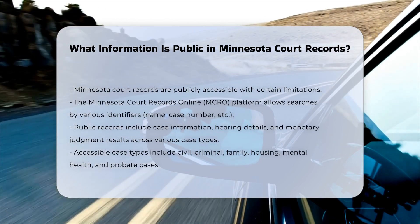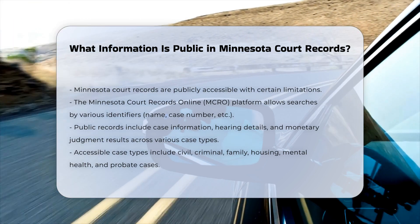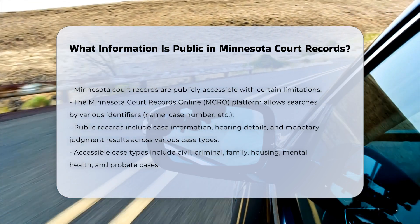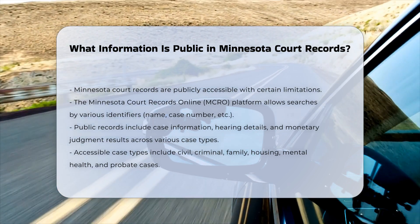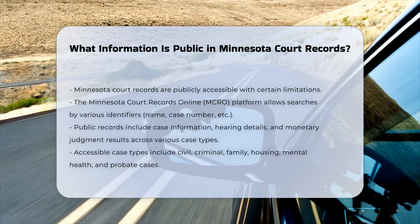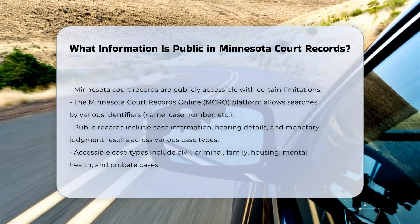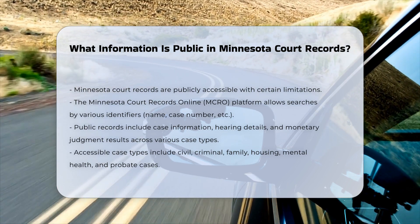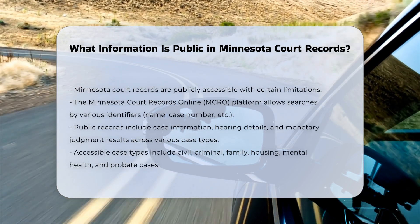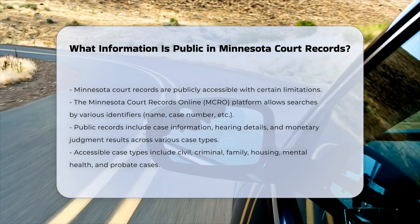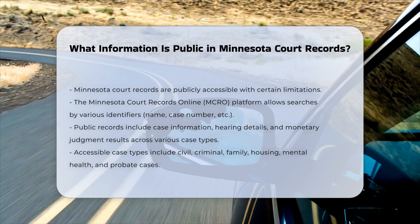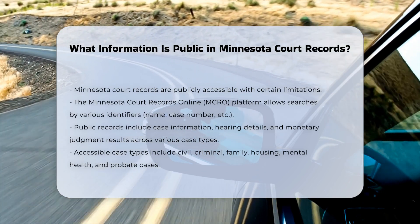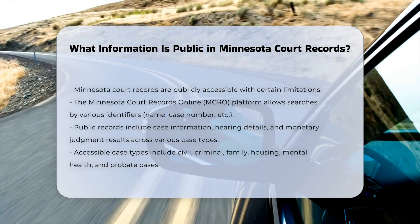Types of public records: Publicly accessible records include case information, hearing details, monetary judgment search results, and documents for publicly accessible district court cases. This includes civil, criminal, family, housing, mental health, and probate cases.